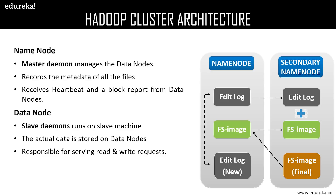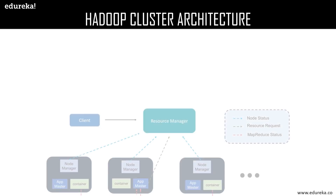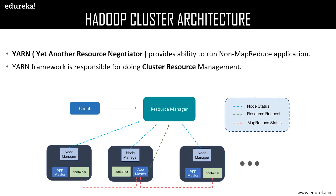The secondary name node is not actually a backup of the name node, but acts as a buffer that saves the latest updates to the FS image obtained during intermediate processing and finally updates them to the final FS image. Now let us discuss YARN — Yet Another Resource Negotiator. YARN consists of the following elements: node manager, app master, and container.